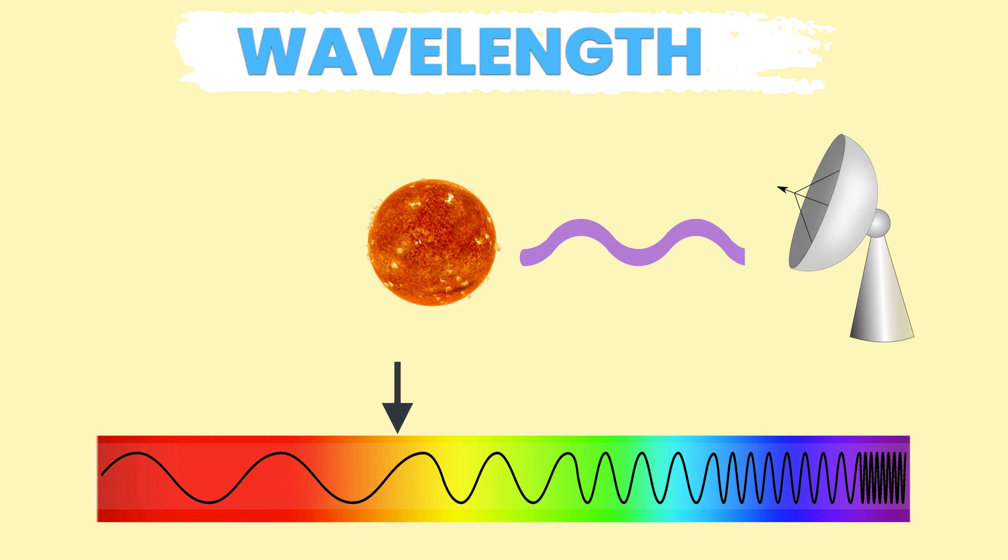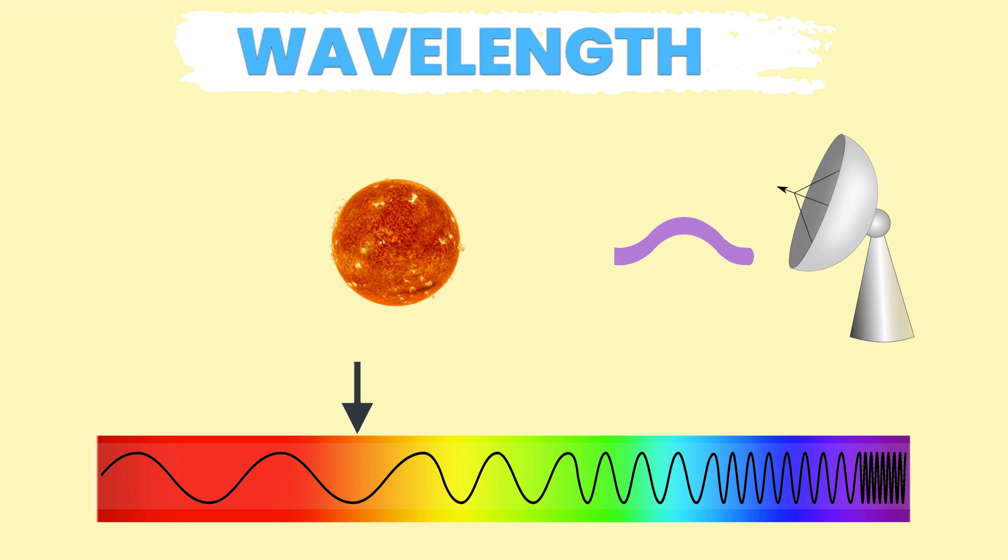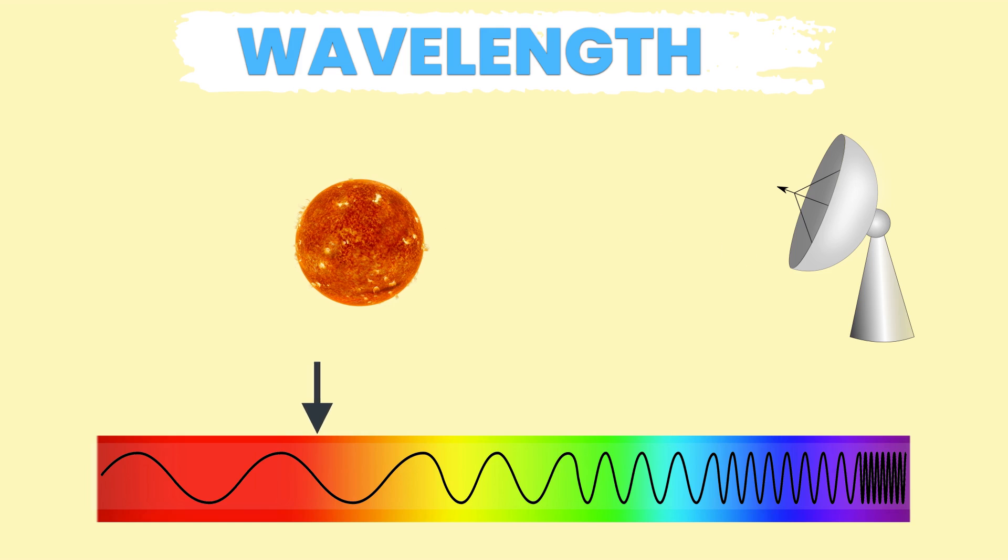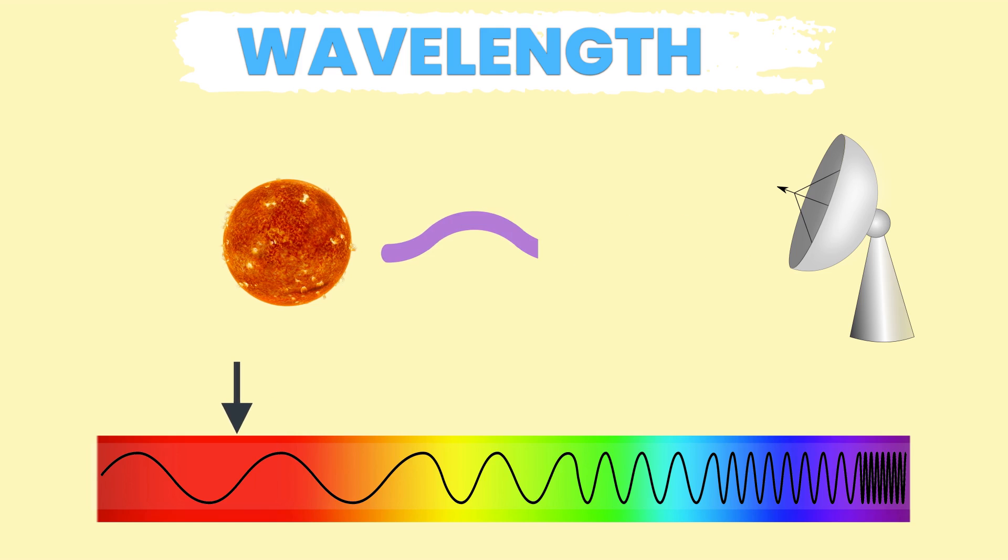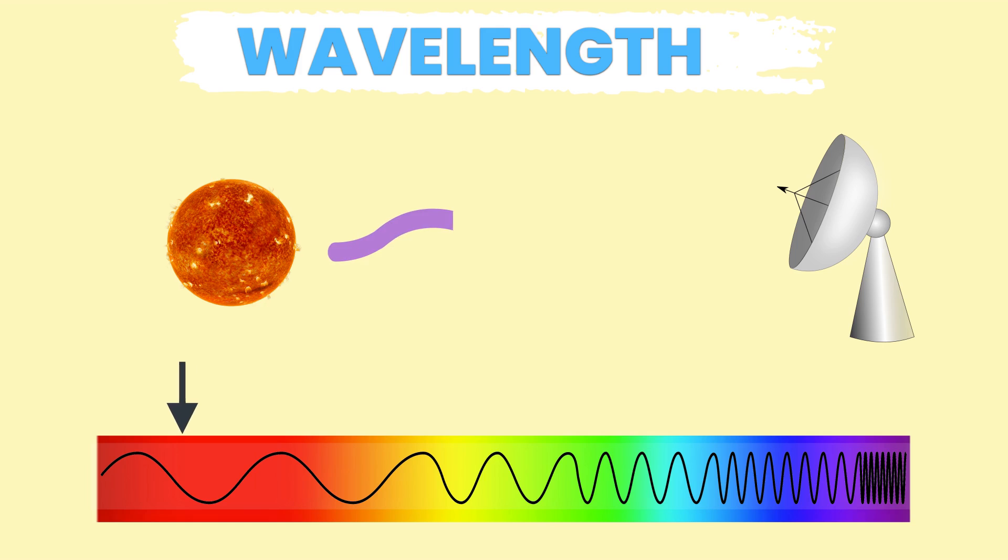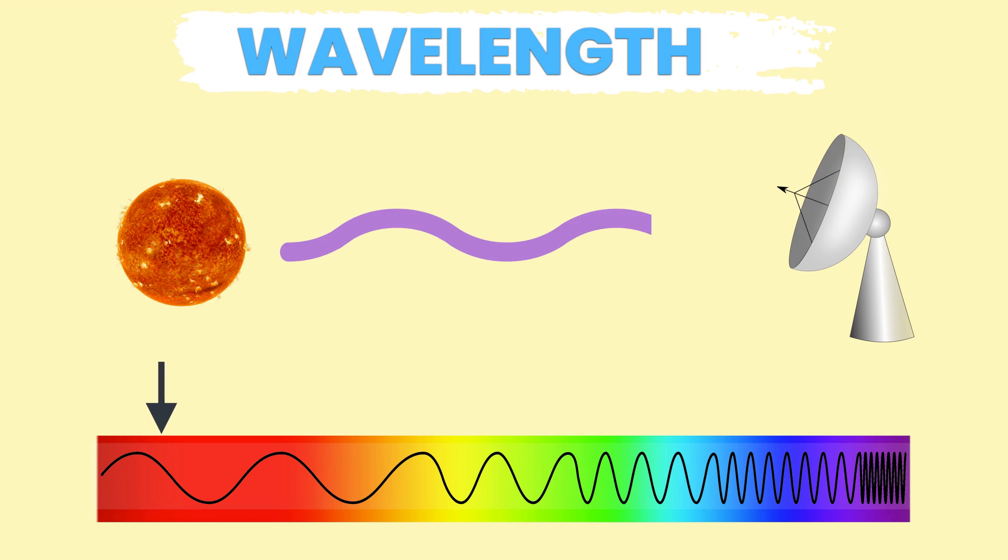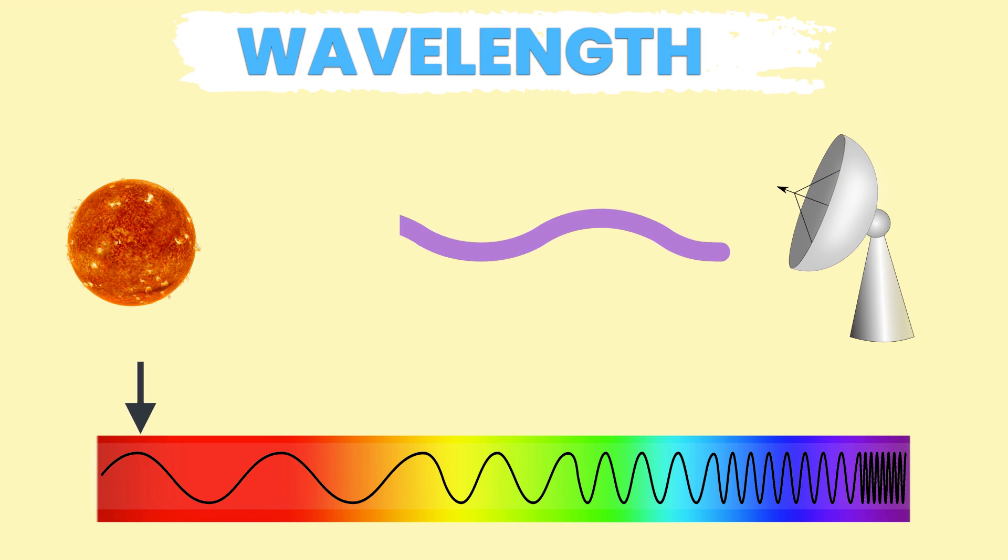Since red has the longest wavelength in the visible light spectrum, light waves appear redder the further they travel. This is called redshift and helps determine how far the star is relative to the Earth. The more redshifted the light appears coming from the star, the farther away it is.